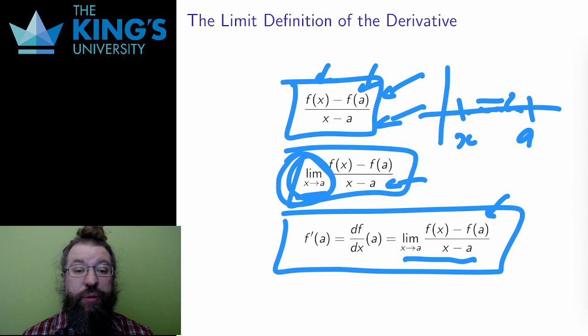If the function is position, this is velocity. If the function is population, this is population growth or decay. This is the thing that algebra couldn't calculate, but now, with limits, I can calculate and understand.